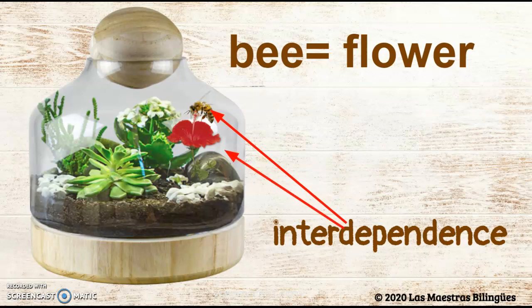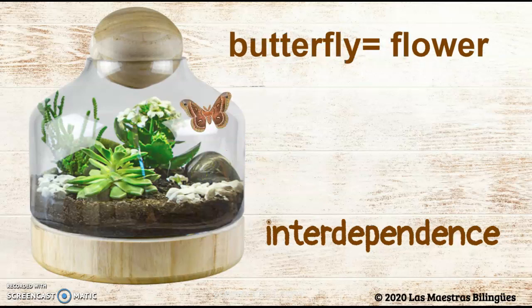The bee gets the pollen from the plants and the flower gives the pollen to the bees. The bees are going to take it to other plants to make more plants.